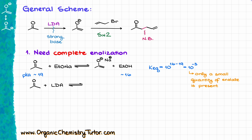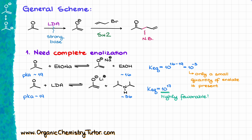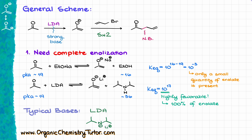If instead we do this reaction with a very powerful base like LDA, we get our enolate, and doing the same equilibrium calculation gives us 10 to the 17th power — a highly favorable equilibrium toward the product. That means essentially 100% of our enolate is formed and the risk of side reactions is minimal. The typical bases used for these reactions are LDA (lithium diisopropylamide) and simple hydrides such as sodium hydride, potassium hydride, or lithium hydride. Most commonly you will see either LDA or sodium hydride within the scope of your course when dealing with the alkylation of carbonyls.